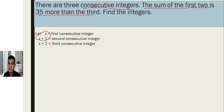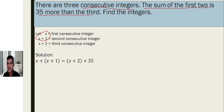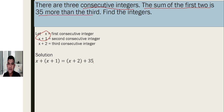Translating this into a mathematical equation, that gives us: x plus (x plus one) equals (x plus two) plus 35. The sum of the first two is represented by an equal sign, and then 35 more than the third means we add 35 to the third side.